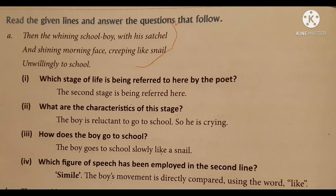Now let's see the textbook appreciation questions. Question one: 'The whining schoolboy with his satchel and the shining morning face, creeping like snail unwillingly to school' — which stage of life is being referred to here? This is the second stage — the school-going boy. The boy is reluctant, meaning unwilling, to go to school, so he is crying. He goes to school slowly like a snail. The figure of speech in 'creeping like snail' is a simile — a direct comparison between two dissimilar things using the word 'like.'